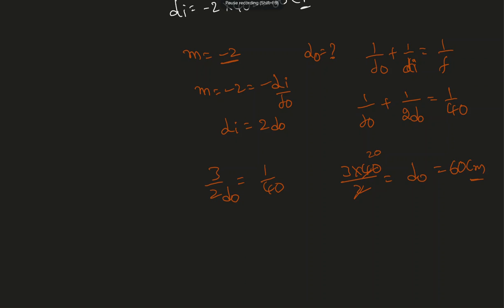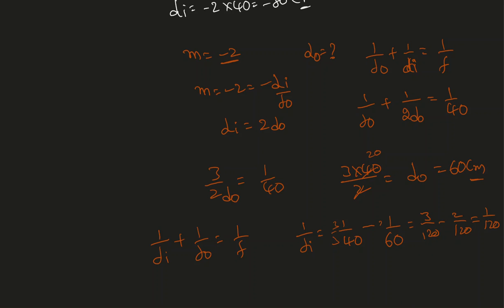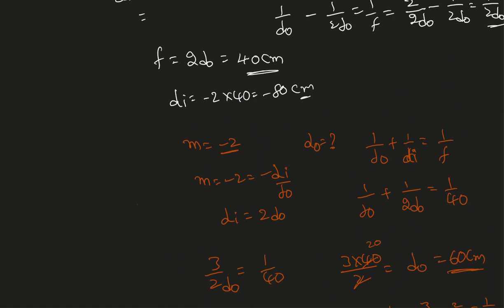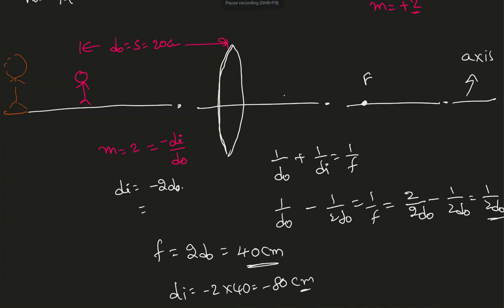Now I know d-naught = 60 cm, and I can verify: 1/d-i = 1/f - 1/d-naught = 1/40 - 1/60 = 3/120 - 2/120 = 1/120, so d-i = 120 centimeters. The key result is the new object distance is 60 centimeters. Since the lens was originally 20 centimeters from the object and is now 60 centimeters from the object, the lens moved 40 centimeters.